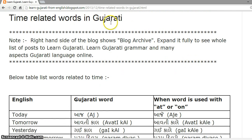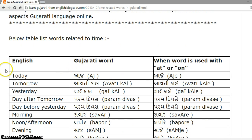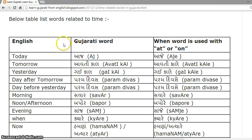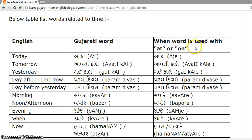Time-related words in Gujarati. In this table, I have mentioned the English word, the corresponding Gujarati word, and the change in the word when it is used with 'at' or 'on'. We will see examples so that it will make it clear.